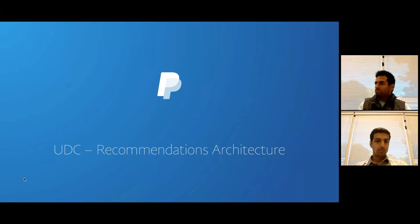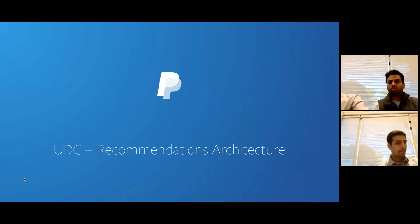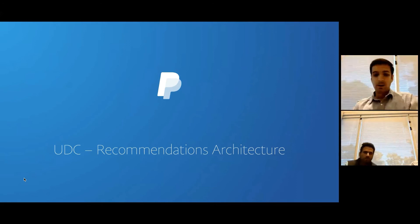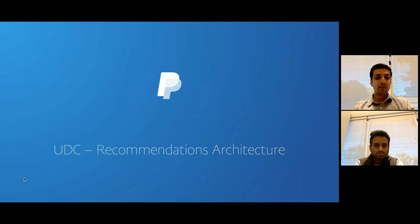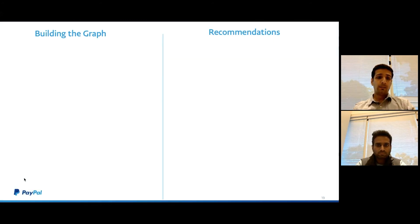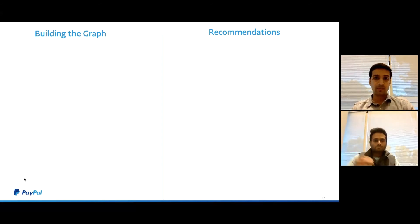With that introduction, I'd like to hand it over to Harsh, who is going to walk us through the internal architecture and implementation of the graph. Thanks Deepak for giving an introduction of UDC and explaining the need for a recommendation system. Now that we know why we need a recommendation system and why we went with Neo4j, let's do a deep dive into the actual architecture. When we talk about recommendations in the architecture, there are basically two components: one is building the graph of connected components as Deepak showed, and second is actually getting the recommendations out of it — mining the recommendations and viewing them back on the UDC UI.